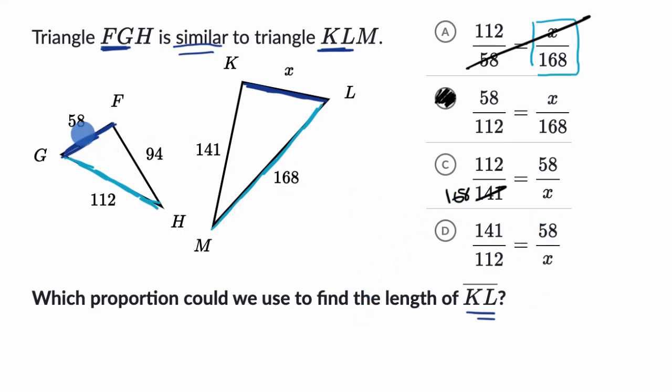And then they're saying 58 over X, so the ratio of this to this is equivalent to the ratio of 141 over 168, over 112, which once again, that's strange on a lot of levels. So yes, I like choice B here.